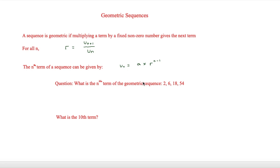I'm Sark and in this video we are looking at geometric sequences. A sequence is geometric if multiplying a term by a fixed non-zero number gives the next term. For all n, we can find r, and r is the ratio, equal to u_(n+1) divided by u_n. In simpler terms, that means the term after divided by the term before — for example u4 divided by u3, or u8 divided by u7 — and all of that gives the same fixed number. The nth term is given by u_n = a · r^(n-1), where a is the starting number and r is the ratio.